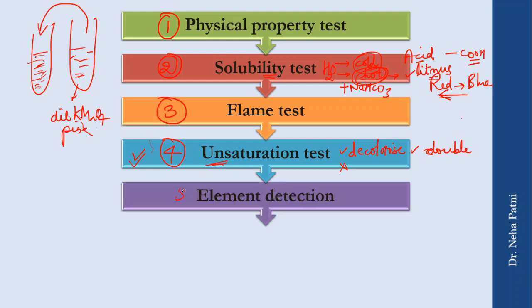The fifth step involves checking for other elements — nitrogen, sulfur, oxygen, and halogens. For example, if an aromatic compound with a distinctive smell is suspected to be nitrobenzene, you need to confirm whether nitrogen is present. Lassaigne's test is used for this purpose, and a separate video will cover it in detail since it involves individual tests for nitrogen, sulfur, and halogens.